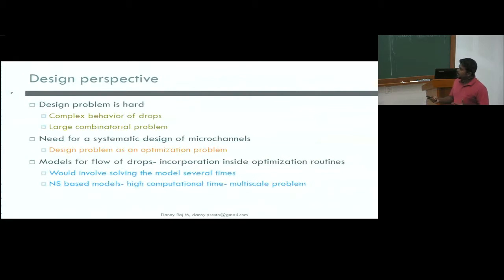We know that the design problem is hard for two reasons. One is the complex behavior of drops themselves because of the nonlinear interactions that ultimately lead to collective behavior. And also, it's a large combinatorial problem. For example, if you take even a simple problem like, how should I send drops? If I have five drops, how should I send them into a channel to make a certain pattern? There are so many different ways in which you can send them in. And there are so many different ways in which you can design your channel. So it's a large combinatorial problem.